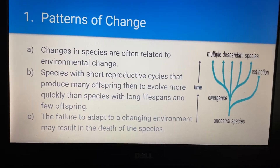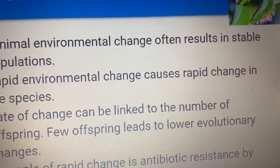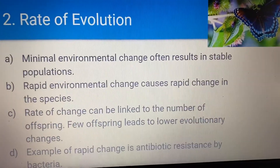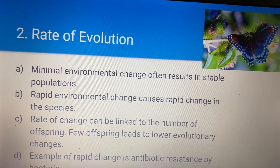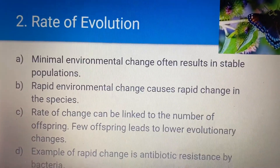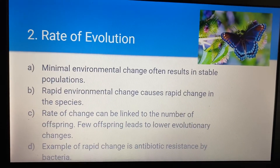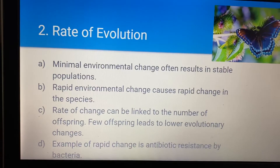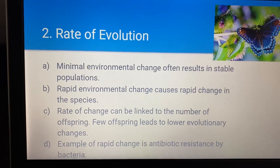We talk about survival of the fittest — this is another example of a rate of evolution. Minimal environmental change often results in stable populations. Rapid environmental change also causes rapid change in the species. You don't want huge environmental changes — you don't want there to be an ice age or a major warming period because it will disrupt the species. Minimal, very little change will result in stable populations. With rapid change, species will rapidly try to adapt. Many won't be able to, like the dinosaurs — over 75% of species went extinct because it was too cold.